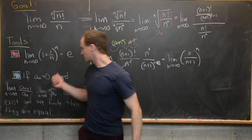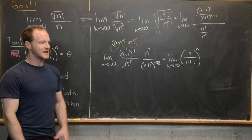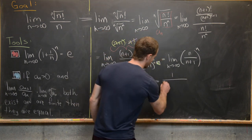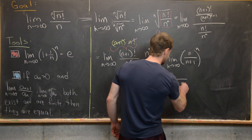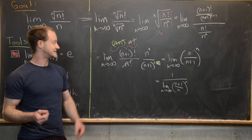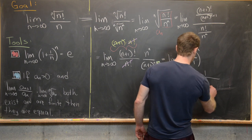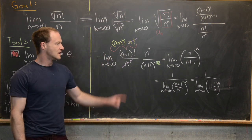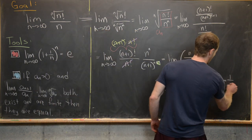This almost matches our first tool. Using an algebraic property of limits, this equals one over the limit as n goes to infinity of the reciprocal, which is (n+1) over n to the nth power. Simplifying, that's one over the limit as n goes to infinity of one plus one over n to the n. But that is our first tool, which equals e. So our final answer is one over e.